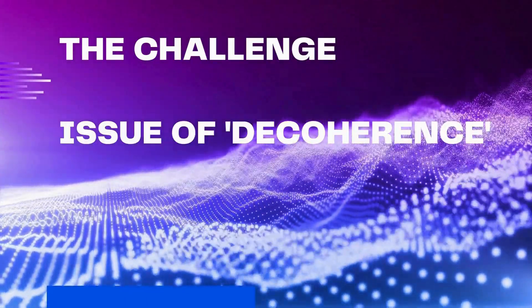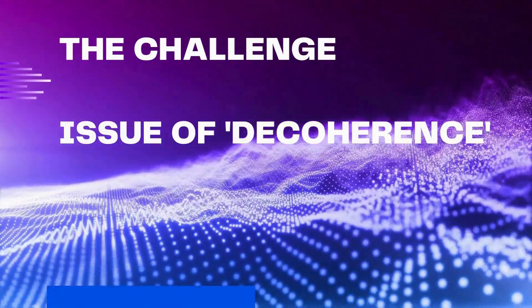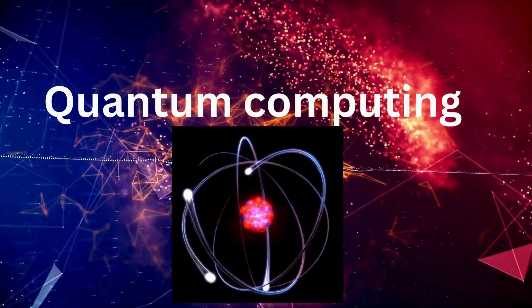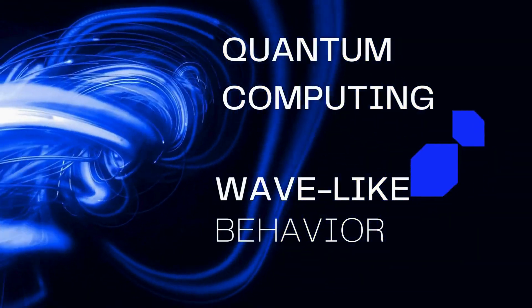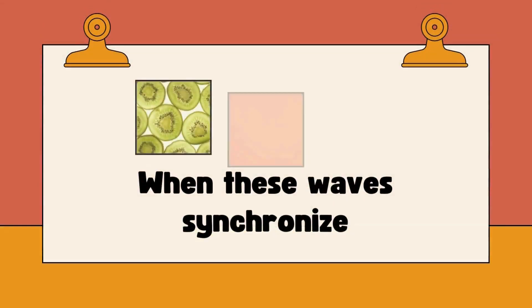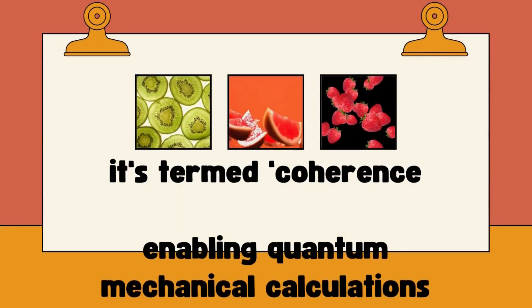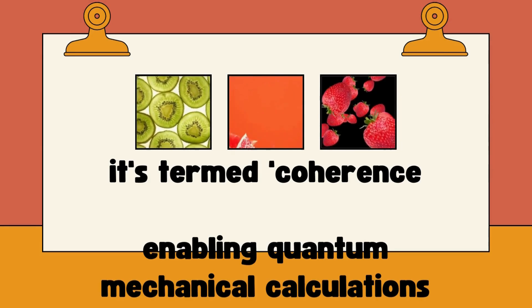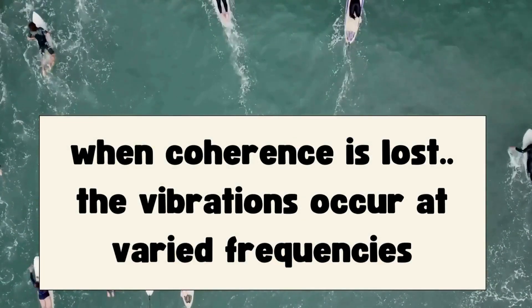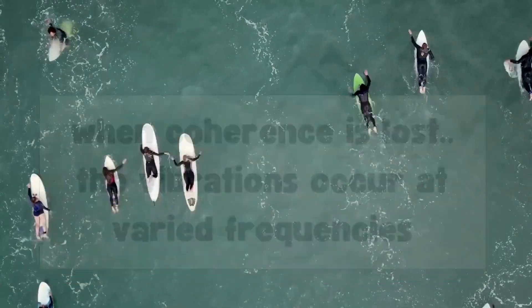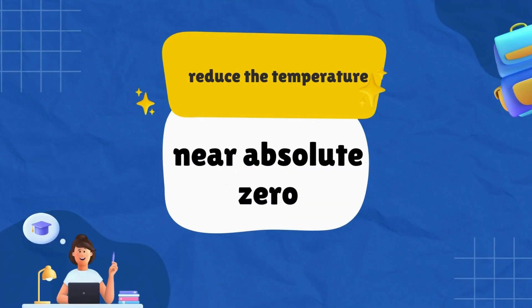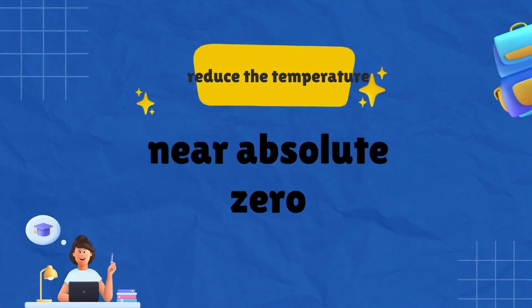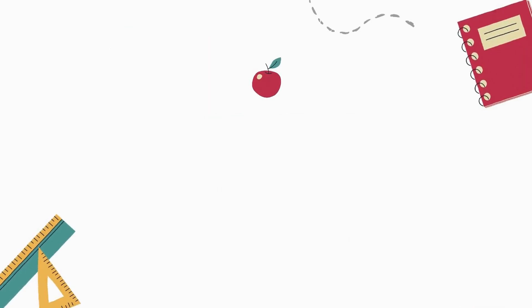What is the challenge? The primary challenge confronting quantum computers is the issue of decoherence. Quantum computing relies on particles such as electrons, which exhibit wave like behavior. When these waves synchronize, it's termed coherence, enabling quantum mechanical calculations. However, when coherence is lost, the vibrations occurred at varied frequencies, resulting in what we refer to as noise. You have to reduce the temperature down to near absolute zero, so everything is pretty much vibrating slowly in unison. That's difficult.